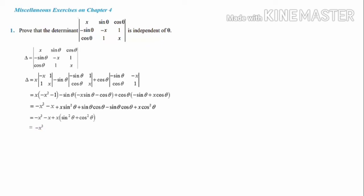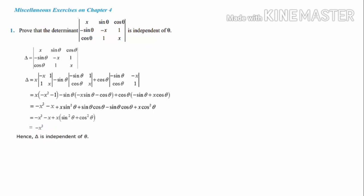The question is to prove that the determinant is independent of theta. We have calculated the value of the determinant and we did not get any term carrying theta — it is only a term carrying x. The answer is -x³. No theta is present. Therefore we can say that delta is independent of theta.